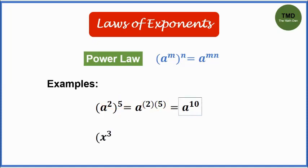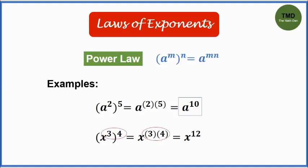Example number 2: x cubed raised to another exponent 4 is equal to x raised to 12. The exponents are multiplied. 3 times 4 is 12.